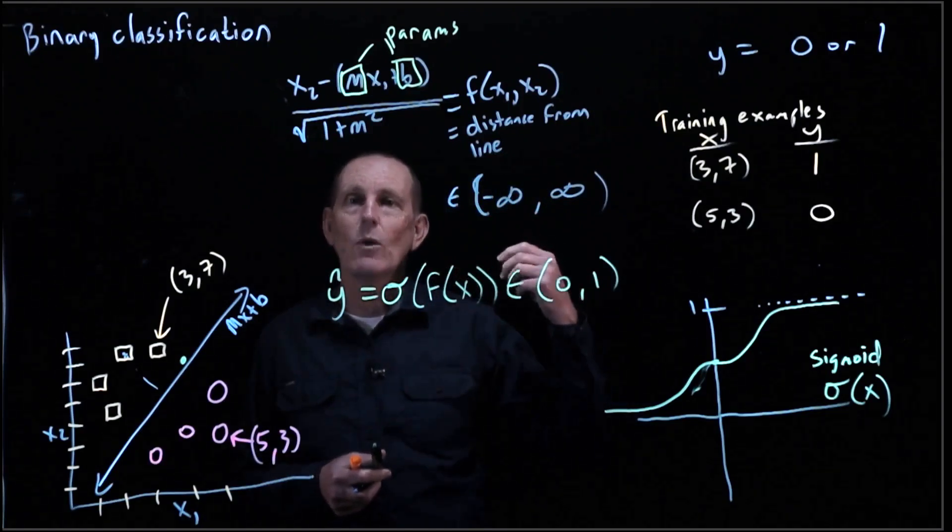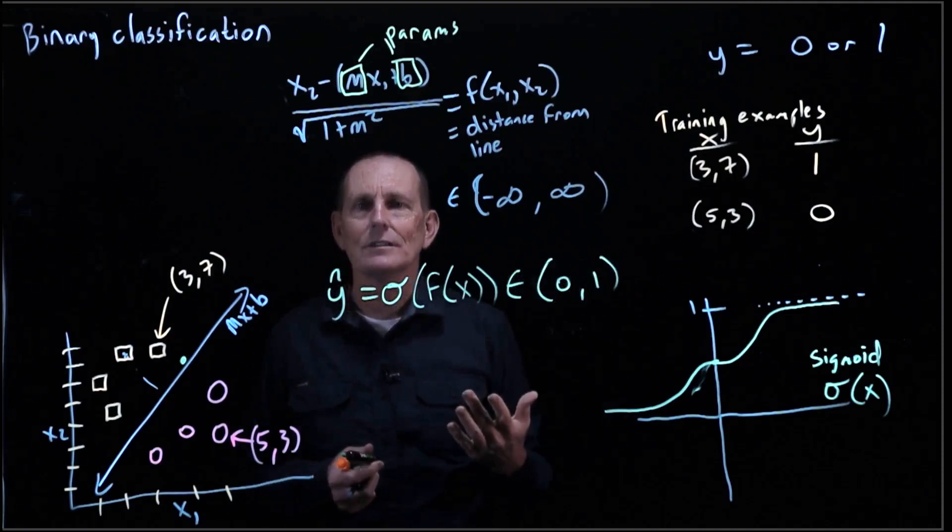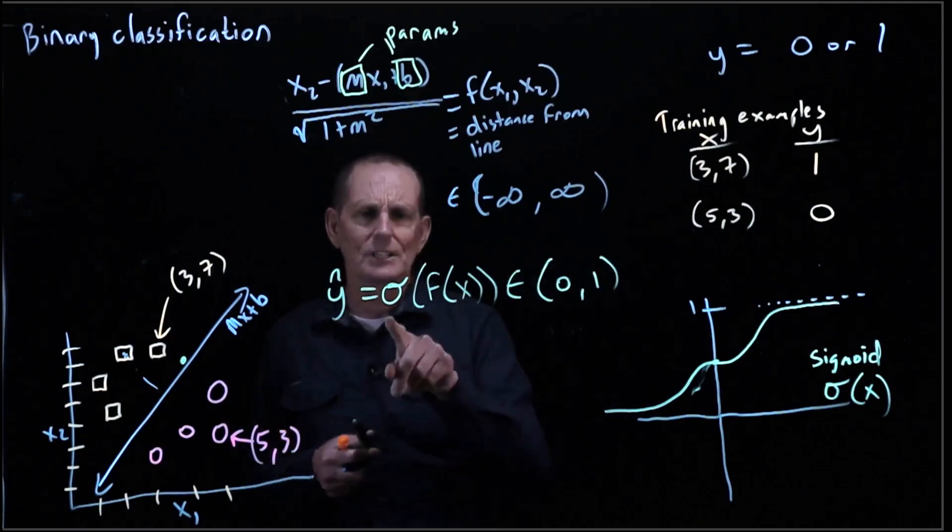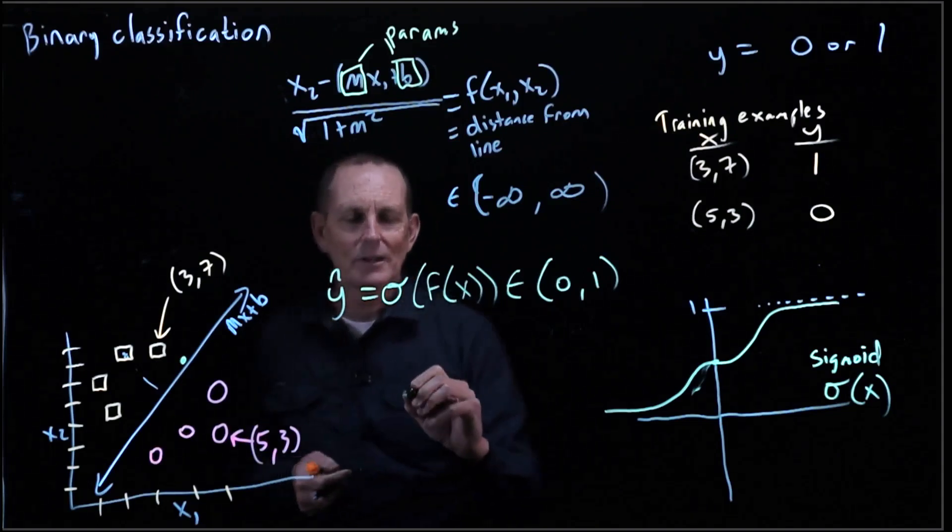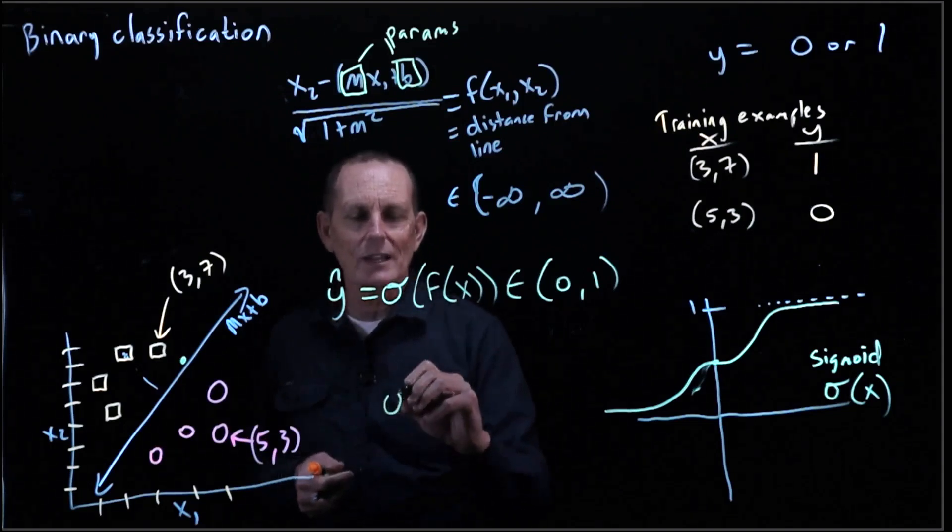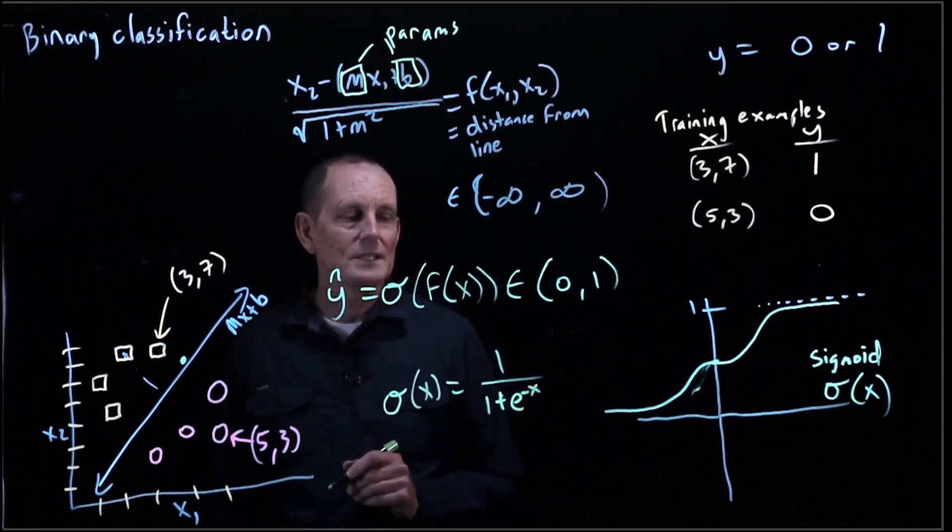Now we need to figure out how to decide what the loss is. So we've got, let's say, a y of 1 and a y hat of 0.75. What's the loss for that? First I guess we better look at the equation for sigmoid. So sigmoid of x equals 1 over 1 plus e to the minus x.